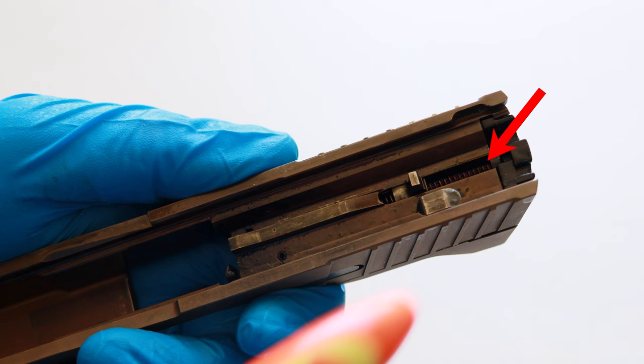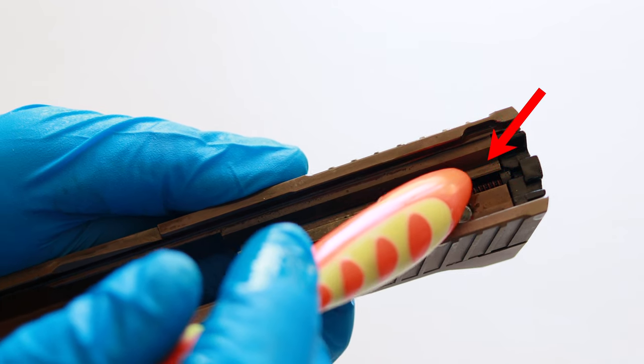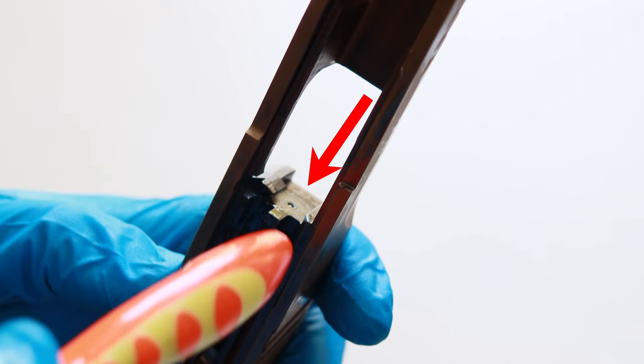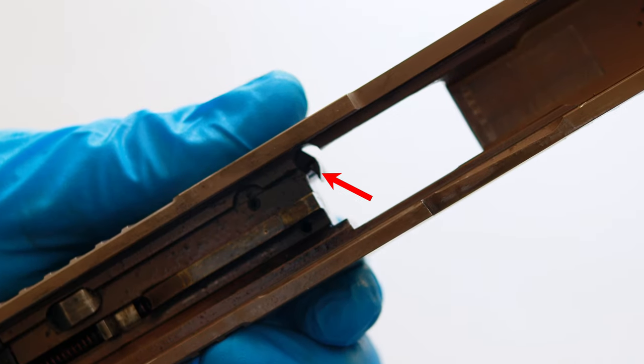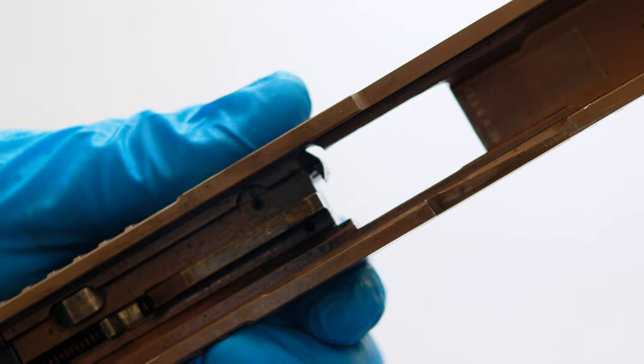Now clean it thoroughly, but you do not want to leak excess CLP down into the striker channel. When you're scrubbing, you're going to have to give the breech face extra attention because it does get really dirty, but you also do not want to leak CLP down into the channel that the firing pin comes out of. Make sure you clean really well around the extractor. I'm also going to brush out the rail channels really well.